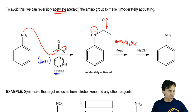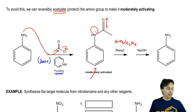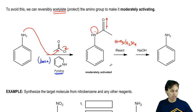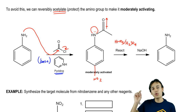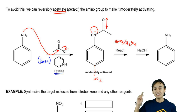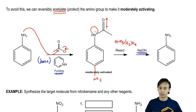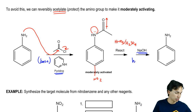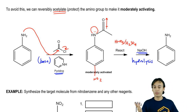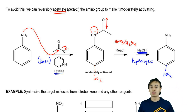Now at this point, let's say it adds mostly para — which it would because of sterics — it's going to add mostly para. What you would wind up getting is a nitro group in that position. The cool thing about this acetylation is that we don't want to keep the acetyl group; we're just doing that to get a moderately activated ring. Now that we've done the reaction, we can easily remove it with base. Base is going to hydrolyze that acetyl group off, and we're going to wind up getting the aniline again, but now with the substituent that we wanted.